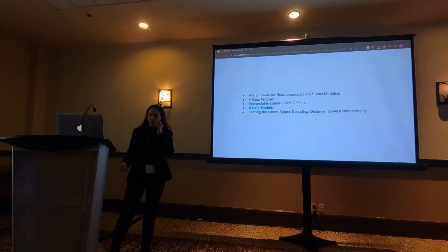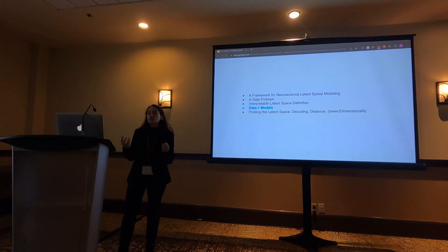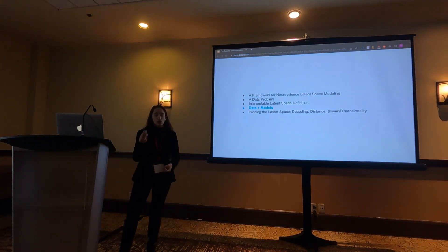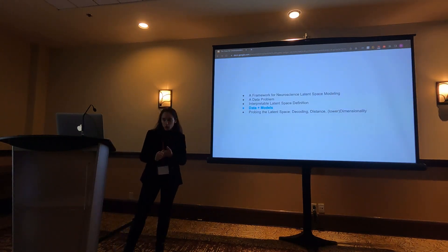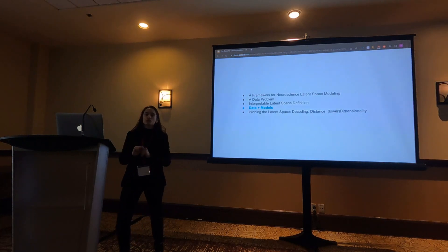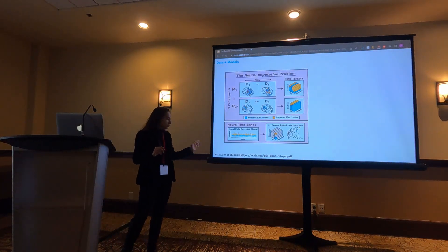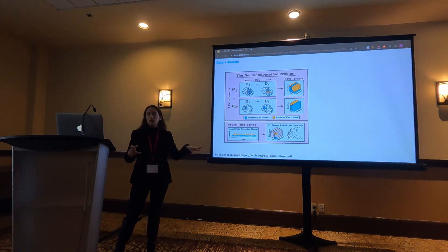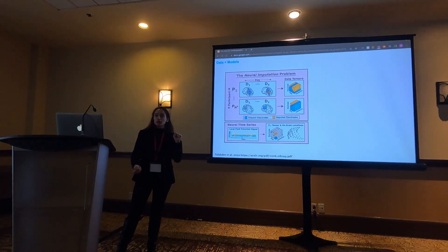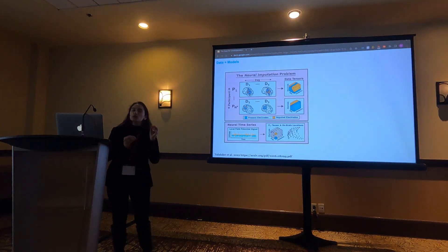I'm going to talk about data and models. Earlier this morning, Bing gave a wonderful talk on her dataset Agile 12 — I recommend going back and watching it. It's ECoG data — electrocorticography — with 12 patients, though I'll only show results for three. We studied this in a context of reconstruction of data; what you read in the paper won't talk about the latent space analysis I'm presenting today — that is new. However, the framework and models come from that paper.